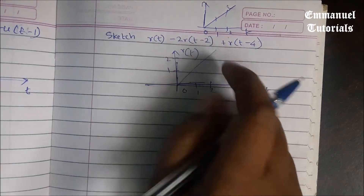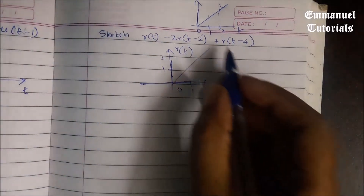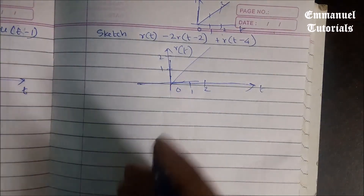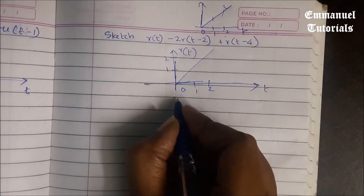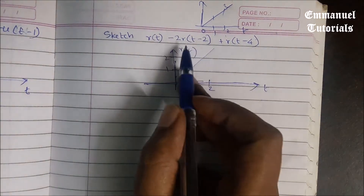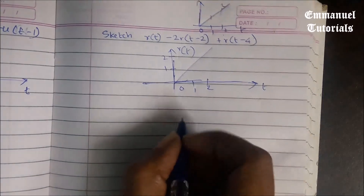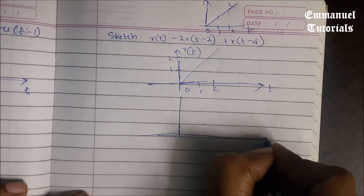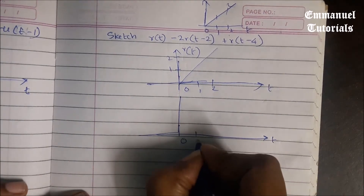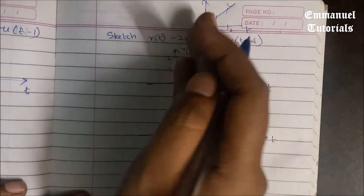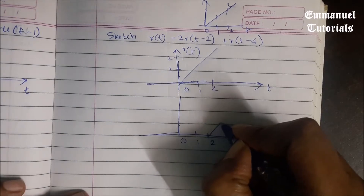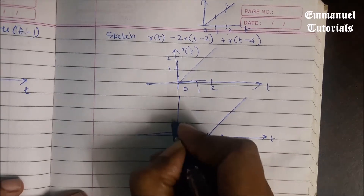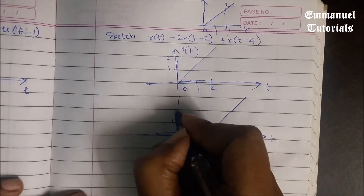Next we have 2r(t-2). This is not a simple ramp — it is time-shifted and also has amplitude scaling. First we will draw the time-shifted one. Since there is a minus sign, it is going to get shifted to the right by 2. So it is going to be the same signal just shifted to the right by 2. At t=2 the amplitude is 0, at t=3 the amplitude is 1, at t=4 the amplitude is 2, and so on.